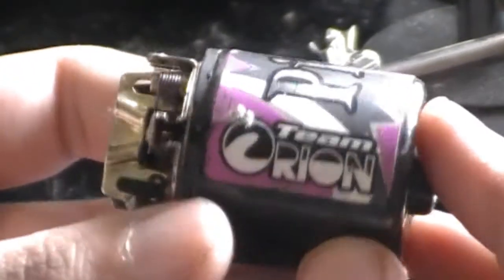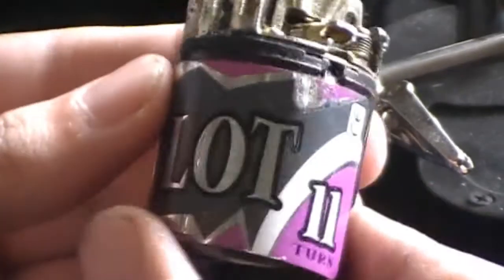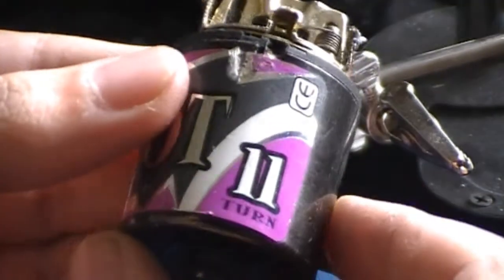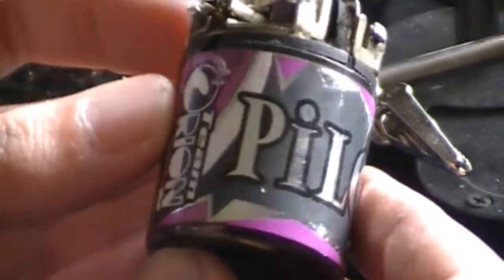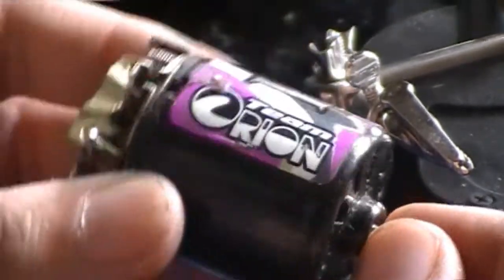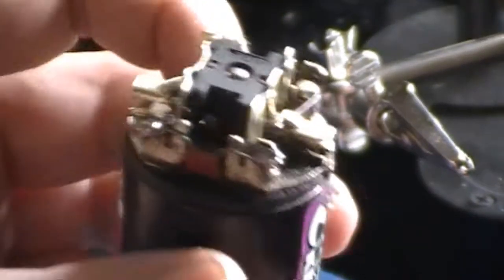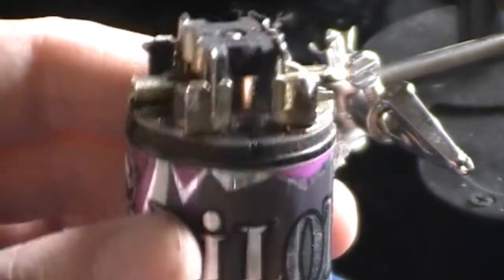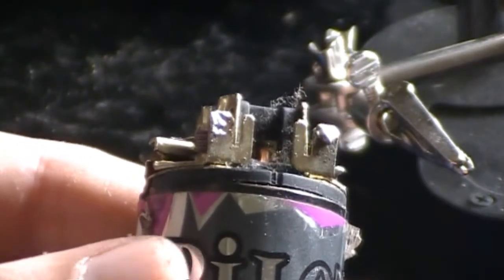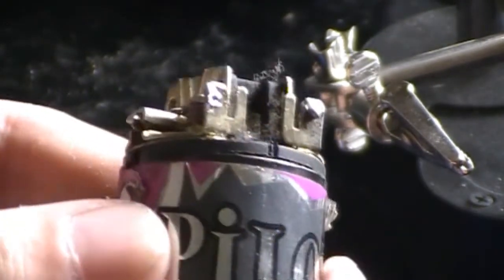Right so here's what we're going to be soldering to. It's an old Team Orion Pilot 11 turn motor. There's nothing special just a modified stock motor so you can't alter the timing.